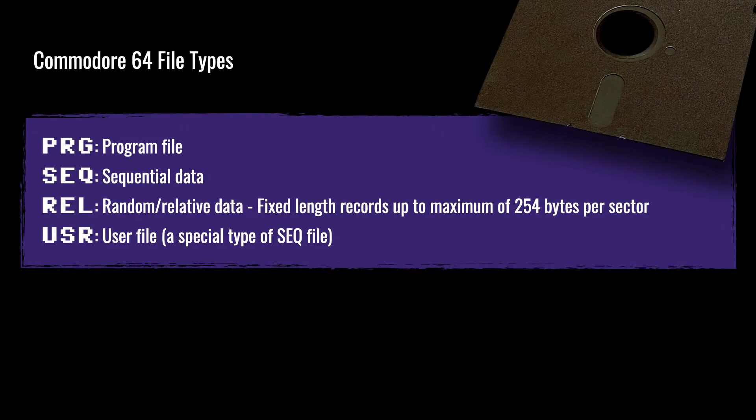There are four Commodore 64 file types that we can access within Commodore 64 BASIC. The first is the program file — a binary file that consists of your computer program, or the tokenized version of your BASIC program; that is a PRG. The next is a sequential file, where the sequential data is simply a text file that is read from beginning to end.